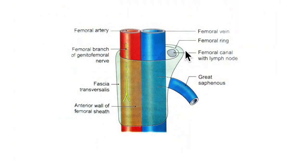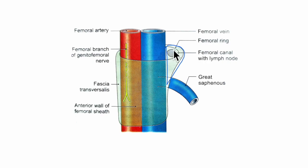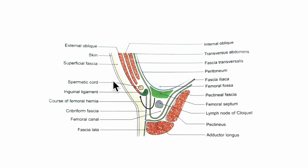The femoral canal is the medial compartment of the femoral sheath. It is conical in shape — wide above and narrow below — measuring 1.5 cm long and 1.5 cm wide at the base. The base or upper end is called the femoral ring. Looking at the boundaries of the femoral ring: anteriorly it is bounded by the inguinal ligament, posteriorly by the pectineus muscle and its covering pectineal fascia, medially by the concave margin of the lacunar ligament, and laterally by the septum separating it from the femoral vein.